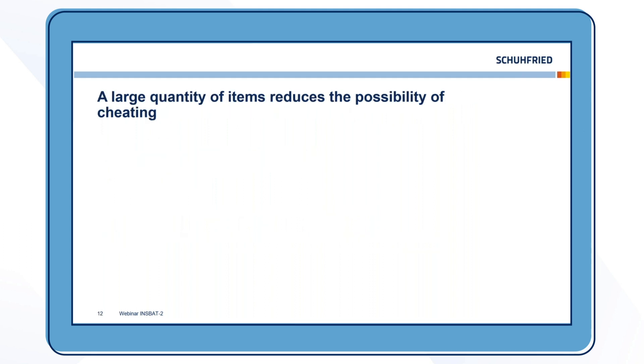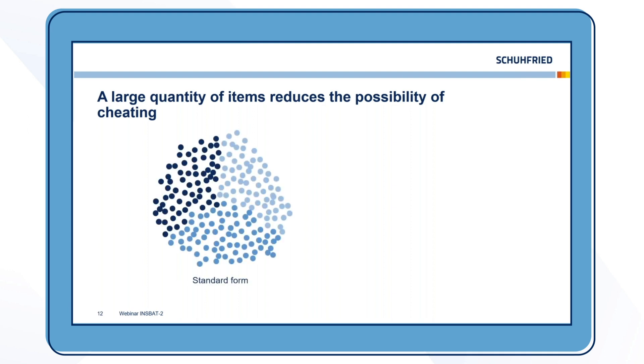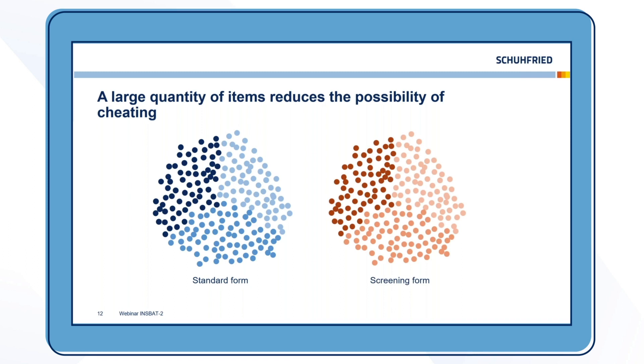We also have a large quantity of items and that reduces the possibility for cheating. INSBAT-2 uses automatic item generation. Here you have kind of an example. The dark blue dots are harder items, more difficult items. The light blue dots are the easier items. And with this automatic item generation, we have a big number of items, around 100 to over 300 items per subtest. Only a small number of items from the INSBAT-1, and all the new items are exclusive for INSBAT-2. Furthermore, we have a completely separate item pool for the screening form. We have a screening form that you can administer online openly and that has a completely separate item pool, and this guarantees very high test safety.